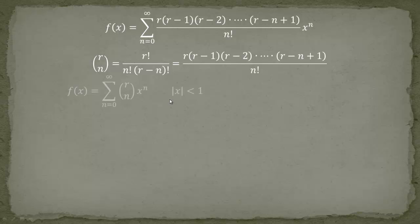So the binomial function f(x) = (1 + x)^r equals the sum from n = 0 to infinity of the binomial coefficient (r choose n) times x to the n. The binomial coefficient is easy to remember: you start with r and subtract 1 each time, with as many terms as n. For example, if n = 2 you have two terms; if n = 1, one term.